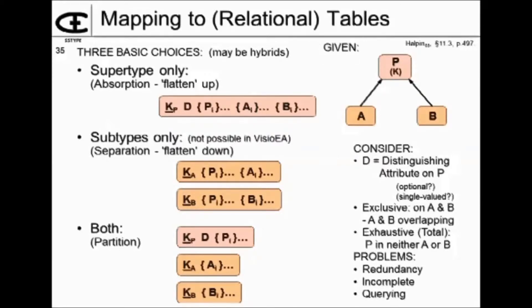Only two of these are possible within Norma. You can either have them absorbed into the supertype or you can have them only in the subtypes. The partition option is not one of the ones that's available within Norma. I don't know why that restriction particularly, but that's the way they built it. And the default that you'll get if you do nothing else when you generate tables, the default will be the supertype level, supertype only. It will absorb up or flatten up.